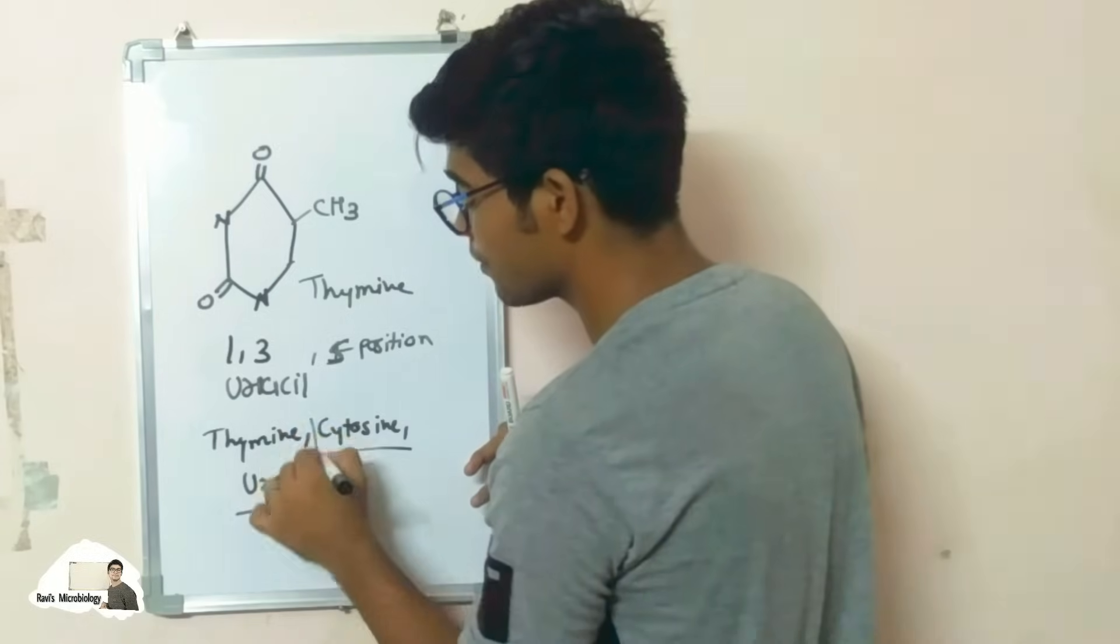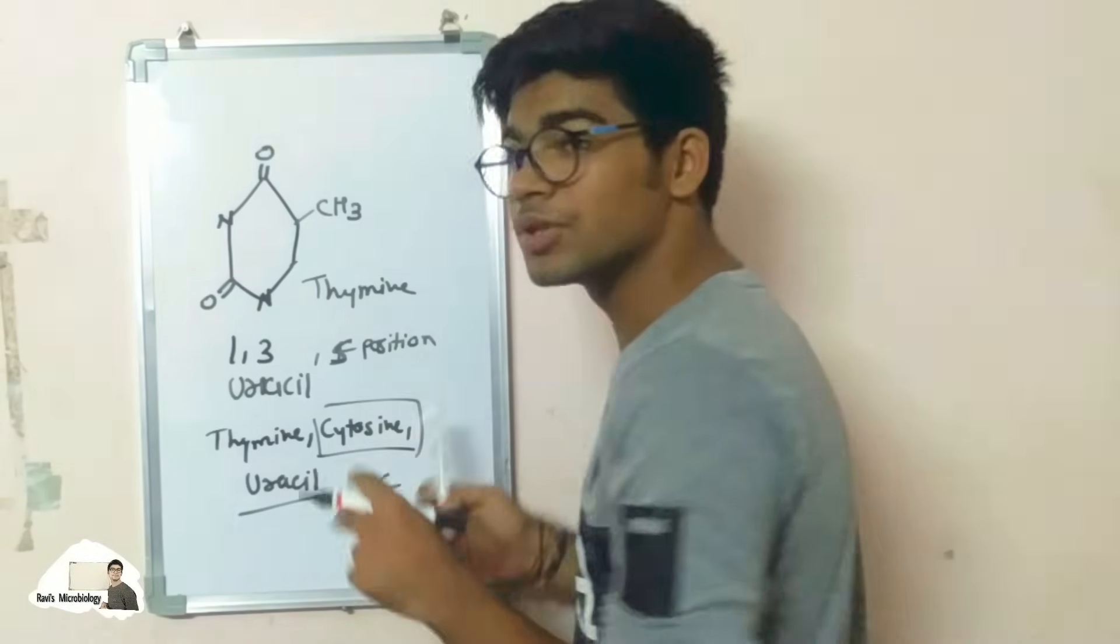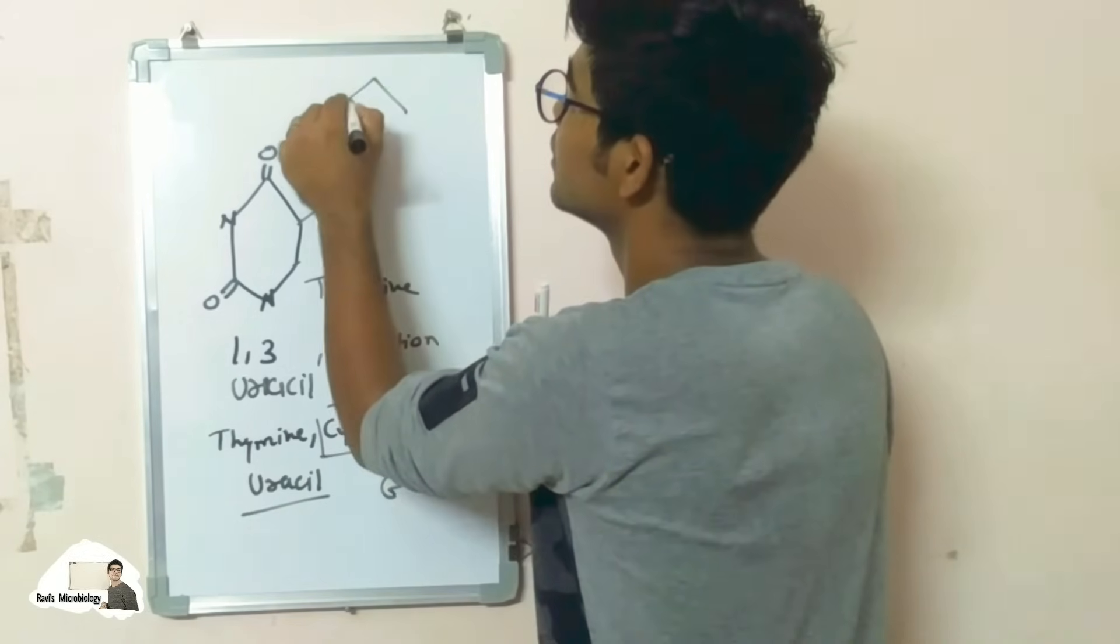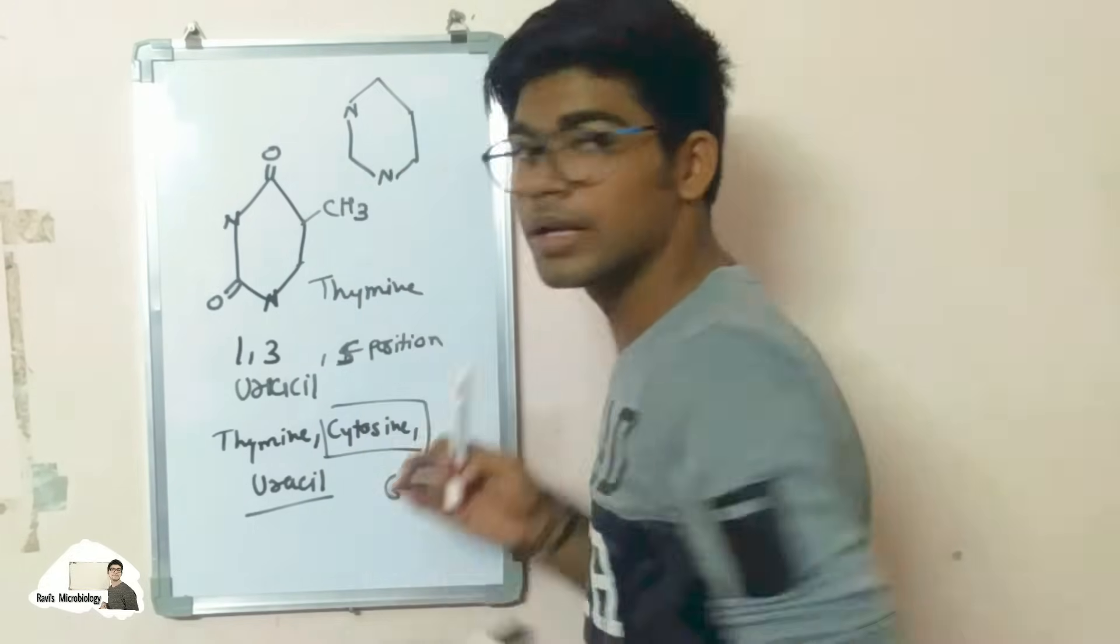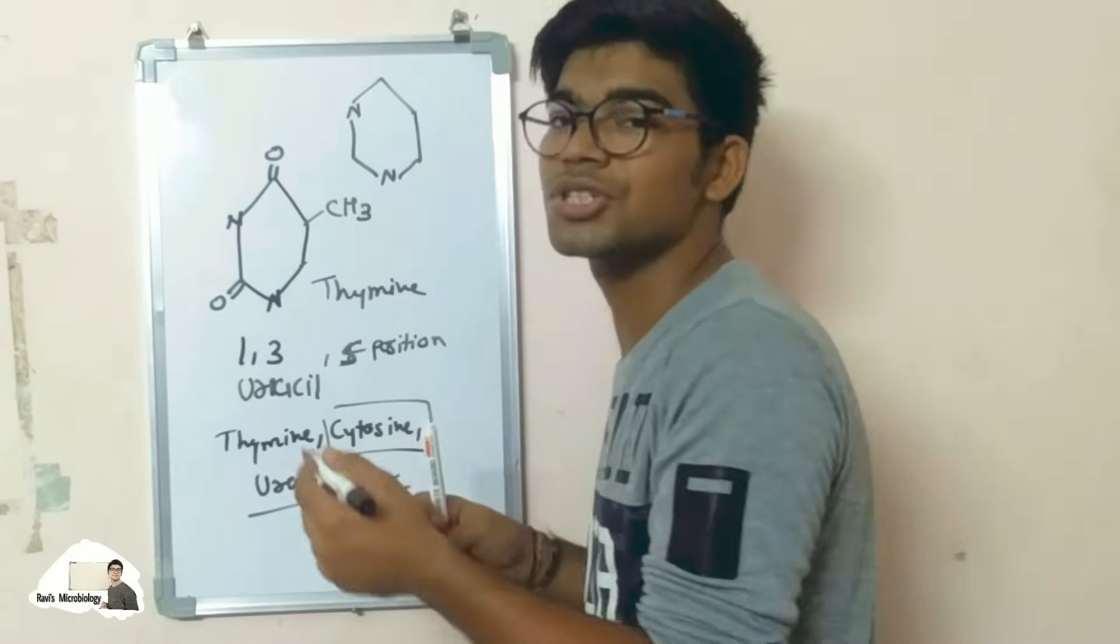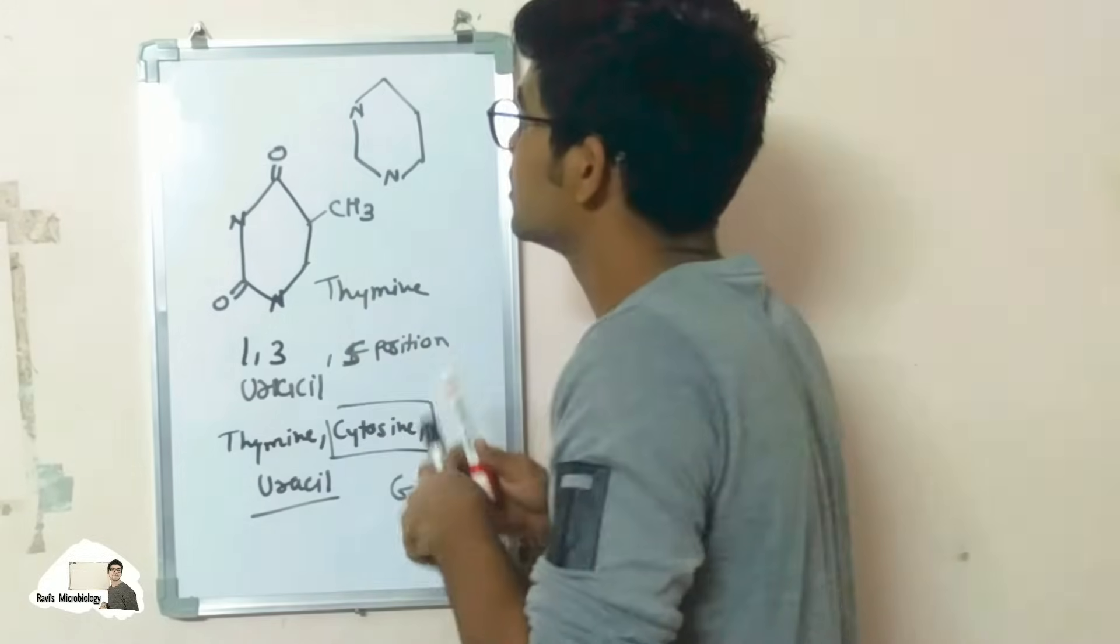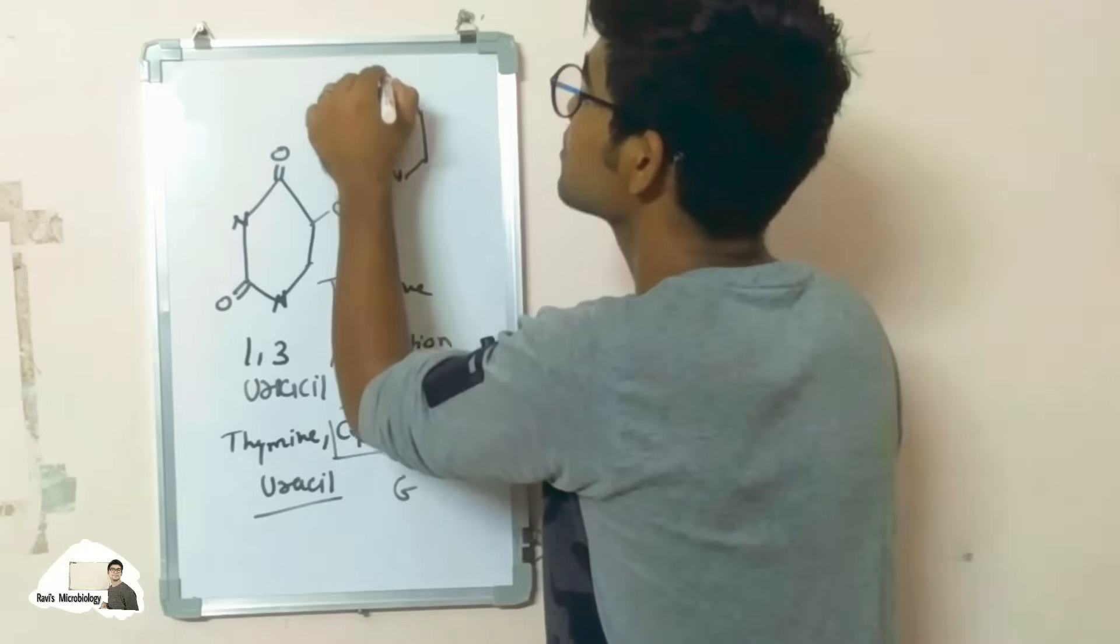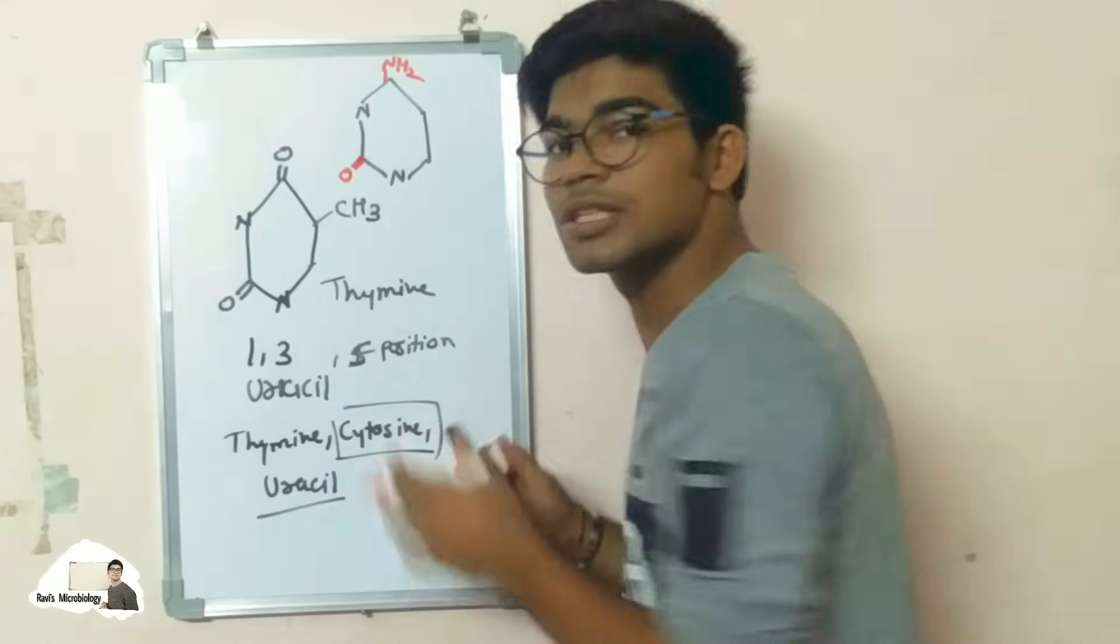And for cytosine, cytosine binds with guanine, we all know that. So it is a reverse structure of guanine. So in guanine we all know at second position amino group and sixth position oxo group were placed. So in this there is reverse. So at second position oxo group is there and at sixth position amino group is there.